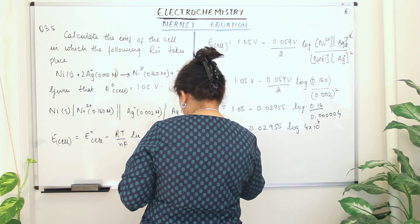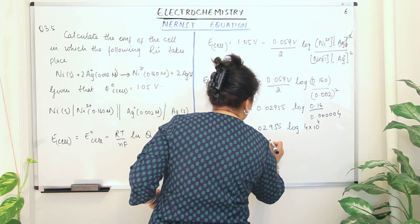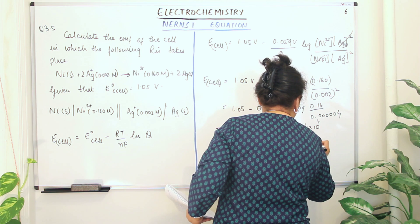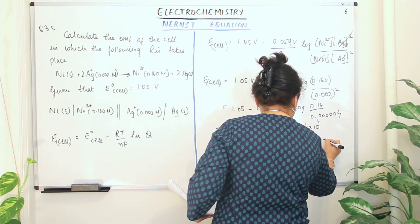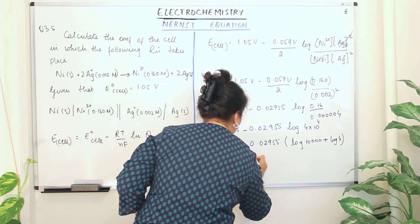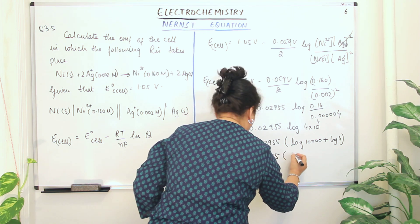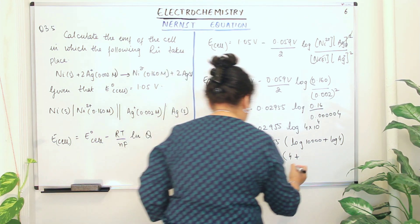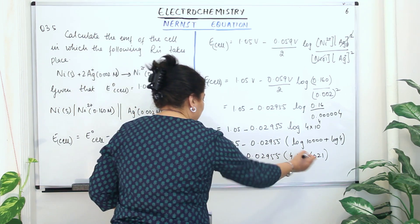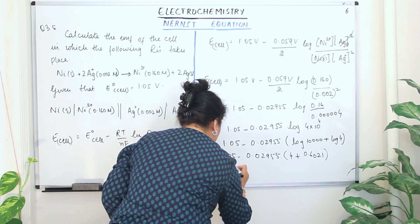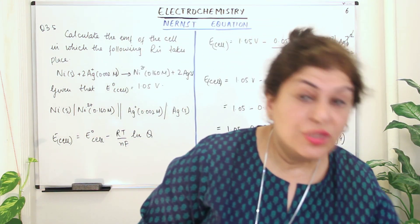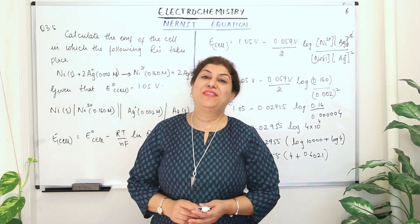So E cell = 1.05 − 0.02955 × 4.6021 ≈ 1.05 − 0.136 ≈ 0.914 volts. Therefore 0.914 volts is the EMF of the cell. That was in-text question 3.5.